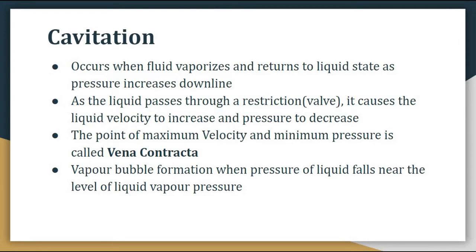Now let us talk about cavitation. Cavitation occurs when fluid vaporizes and returns to liquid state as pressure increases downstream. In flashing, the fluid vaporizes and stays in vapor state. In cavitation, it vaporizes but then returns to liquid state because pressure increases, and the damage that occurs is called cavitation. As the liquid passes through a restriction, it causes liquid velocity to increase and pressure to decrease. For example, if you have a nozzle and you hold its tip, you will see the velocity of the liquid coming through it changes.